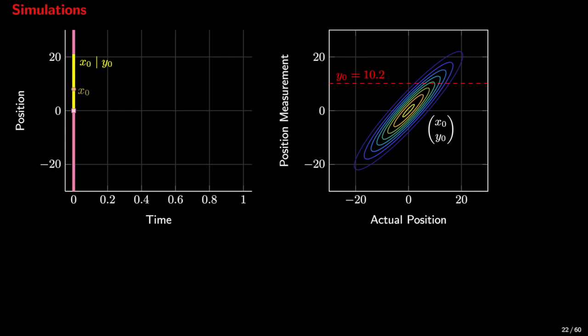At time 0, we obtain the measurement y₀ equals 10.2. With this measurement, we determine the conditional distribution of x₀ given y₀, and we estimate x-hat-0-0, which is the conditional expectation of x-hat-0, given this measurement of y₀. This is shown here with a yellow bar. Given this measurement of y-hat-0, namely 10.2, there is a 99.7% probability that the state is actually contained in this yellow interval. So see how we updated